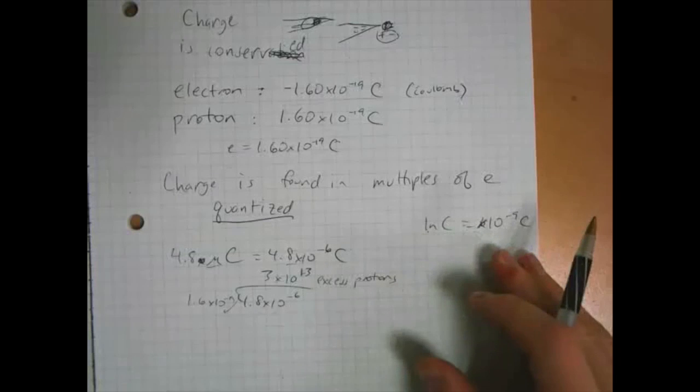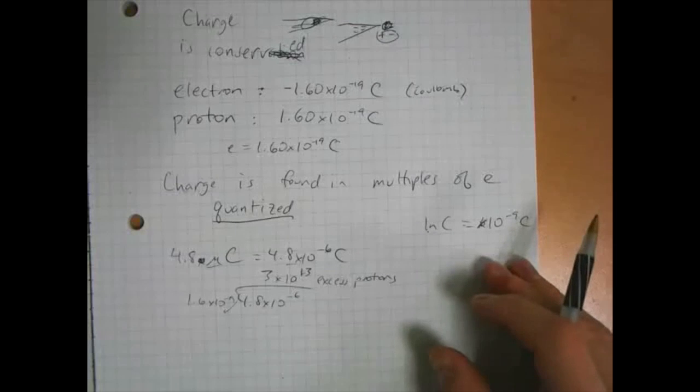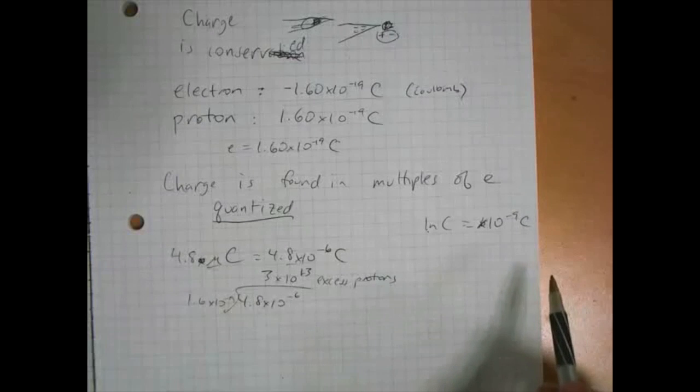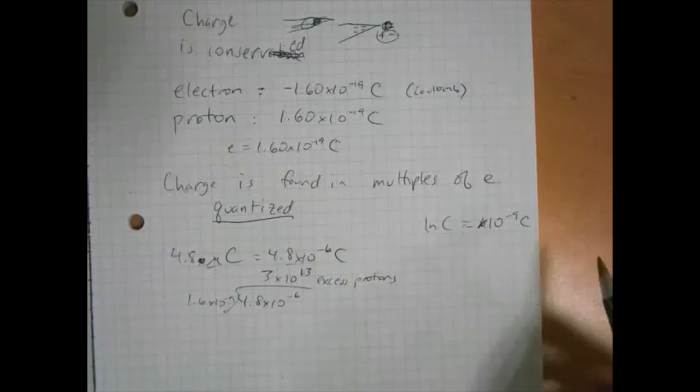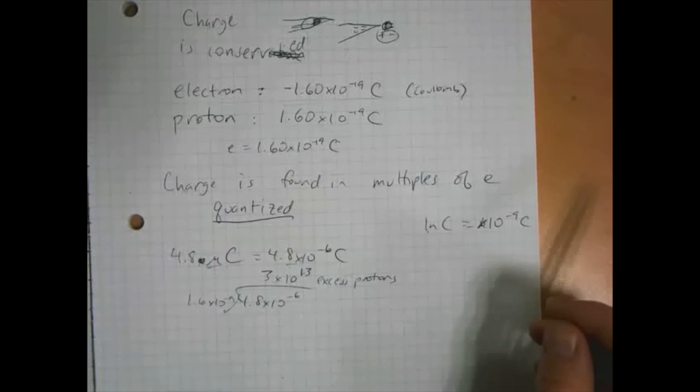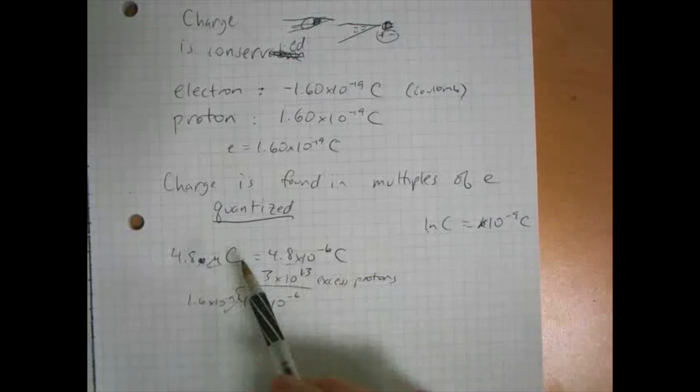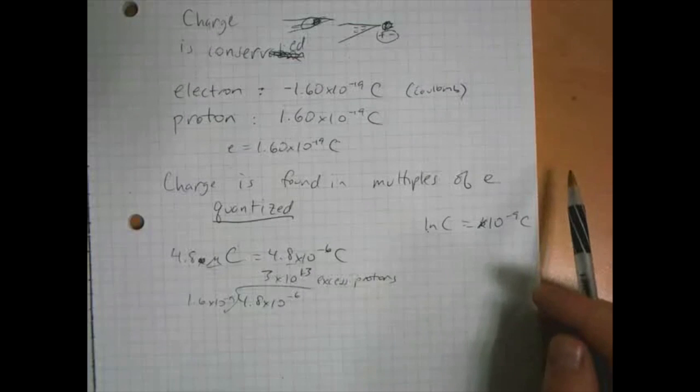10 to the minus 19th is pretty small, so you usually don't see charges of like a coulomb. Generally you see them on the order of micro coulombs. And generally objects that you see on a normal basis have a lot of charges in there but they're balanced. They're the same number of electrons and protons, and so most objects you see are electrically neutral. They don't have a net charge. And though most charges you'll see are on the order of micro coulombs, you can have more. Lightning bolts typically transfer 20 to 30 coulombs of charge, so they move a lot of charge around.